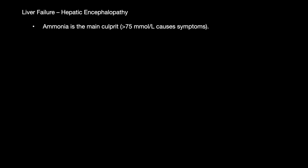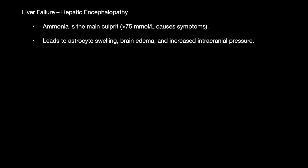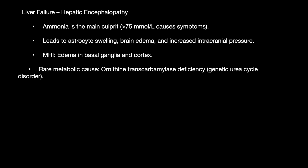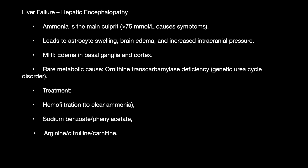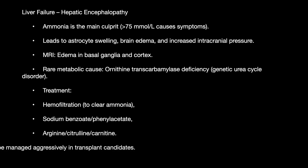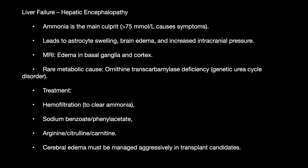In liver failure, ammonia is the main culprit — if more than 75 micromoles per liter, it leads to astrocyte swelling, brain edema, and increased intracranial pressure. MRI shows edema of the basal ganglia and cortex. Rare metabolic causes include ornithine transcarbamylase deficiency, a genetic disorder of the urea cycle. Treatment includes hemofiltration to clear ammonia, sodium benzoate, arginine, citrulline, and carnitine. Cerebral edema must be managed aggressively in transplant candidates.